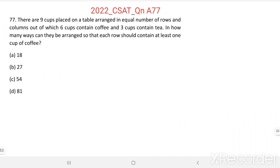Q77. There are 9 cups placed on a table arranged in equal number of rows and columns, out of which 6 cups contain coffee and 3 cups contain tea. In how many ways can they be arranged so that each row should contain at least 1 cup of coffee?